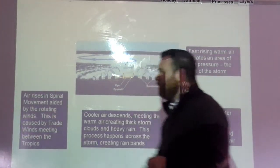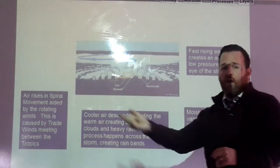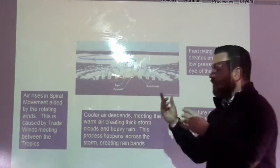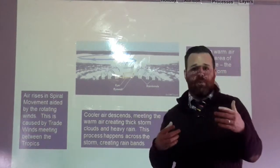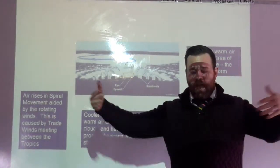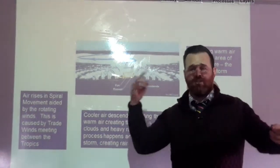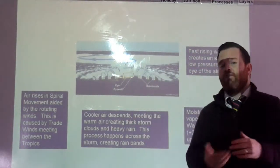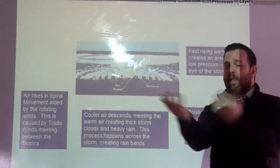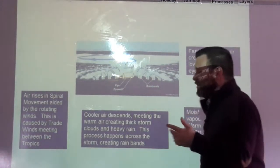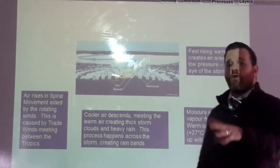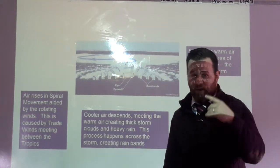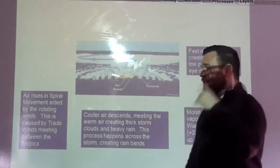The air rises in a spiral movement, and that's aided by rotating winds. Those winds are rotating because they are the trade winds that meet between the tropics along the equator, coming in opposite directions. They're also coming on a curve because of the curvature of the earth, arriving in a spinning, spiralling pattern.